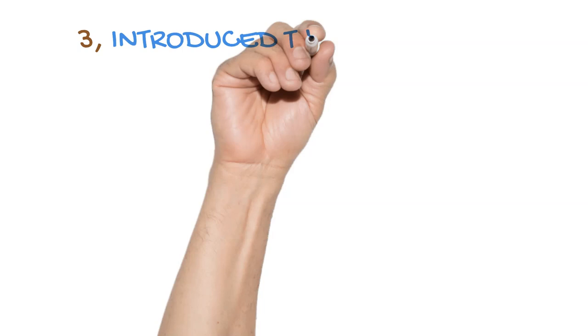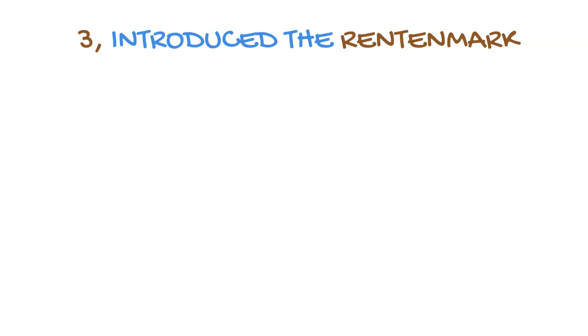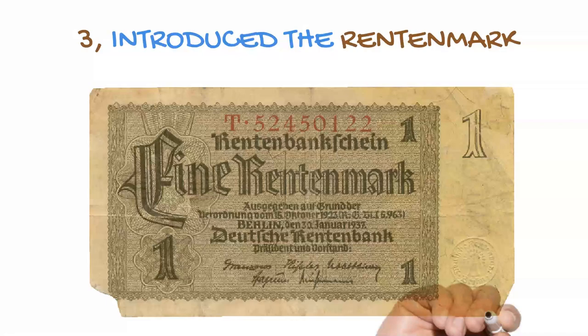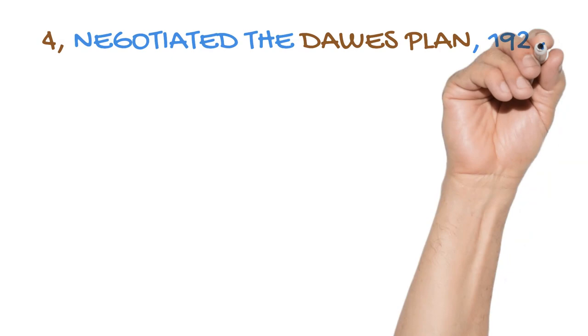In order to get hyperinflation under control, Stresemann, along with Hjalmar Schacht and Hans Luther, replaced the useless German Papiermark with a new currency, the Rentenmark, which was backed by mortgaging land that was used by agriculture and business. The Rentenmark was later replaced by the Reichsmark in 1924.